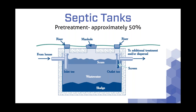Oftentimes we'll use a screen or filter on the outlet end to screen some of the solids. One important thing to note about septic tanks is they're very good for pretreatment, but you're going to get somewhere between about 25 to 50% treatment efficiency from them. So the raw waste coming in from the house will be treated to about 25 to 50% efficiency by the time it goes out. In conventional septic systems, final dispersal into the soil does the remaining treatment. We'll talk about primary treatment — septic tanks — and then advanced or secondary treatment as we move through the presentation.